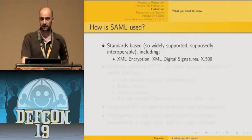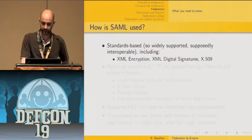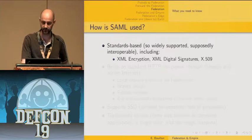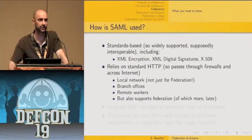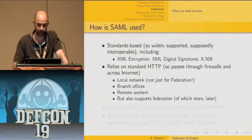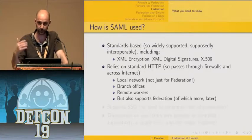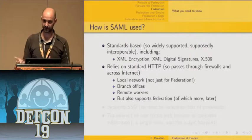SAML is standard-based, widely supported, and supposedly interoperable. The underlying standards include XML encryption, XML digital signatures, and X.509 for certificates. It heavily relies on HTTP for conveying SAML assertions through the network, so it easily passes through firewalls. Several types of deployment are supported: local network, branch offices, remote users, and — most importantly — federation and federated scenarios.